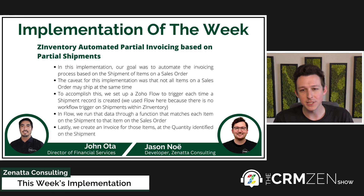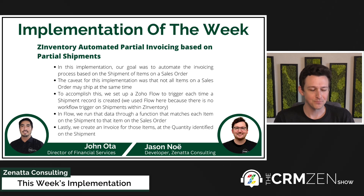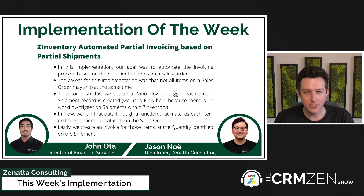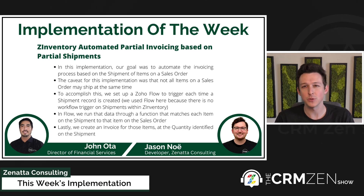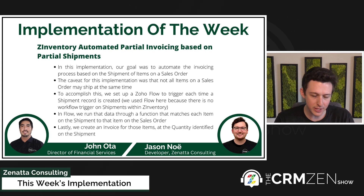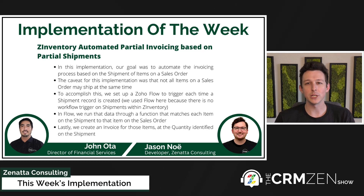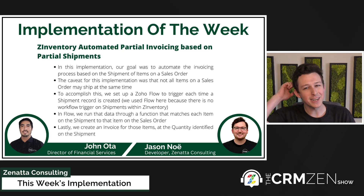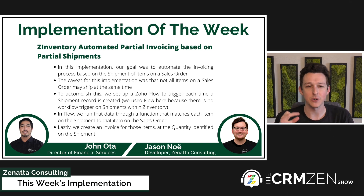Essentially, this is an automation for partial invoicing based on partial shipments within Zoho Inventory. The client invoices their clients once the product has shipped — it doesn't need to be delivered, just shipped with a tracking number picked up by UPS. The challenge was that they might have a sales order for many different products but ship them as they come in, so they needed to create partial invoices as they ship out subsets of items on that order.